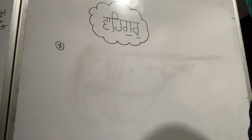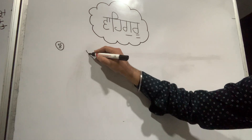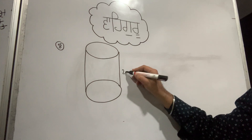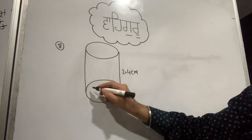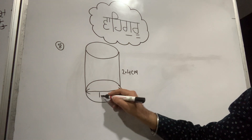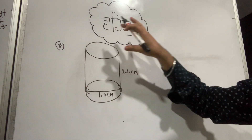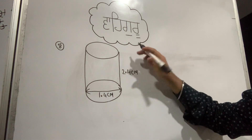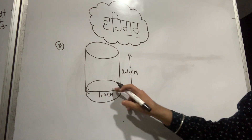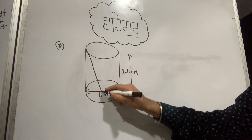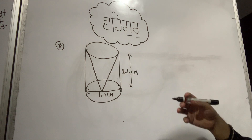From a solid cylinder whose height is 2.4 cm and diameter 1.4 cm, a conical cavity of the same height and same diameter is hollowed out.